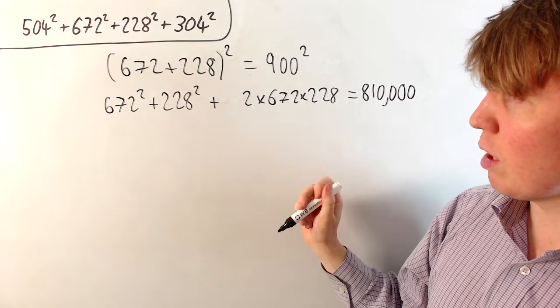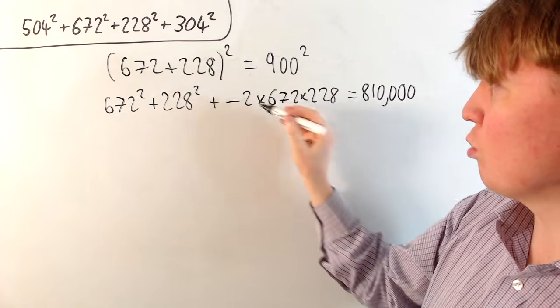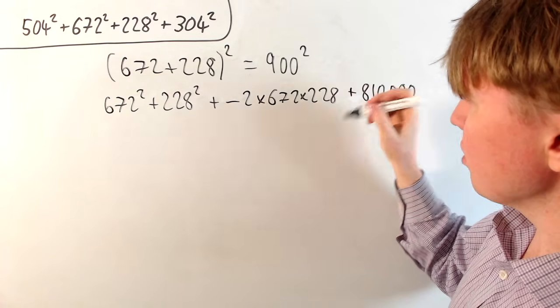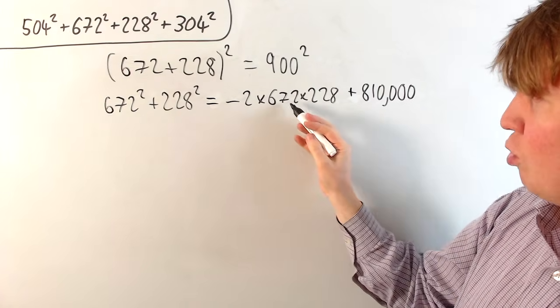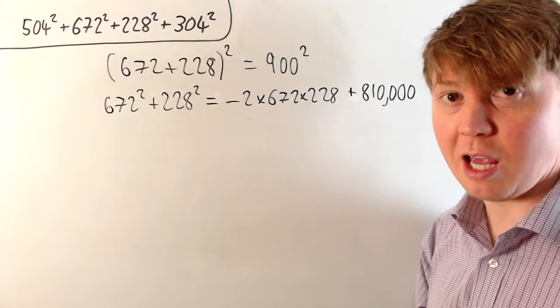To get the sum of these two squares expression on its own, we just need to subtract this term. And we take that onto the right-hand side. So we can write the sum of these two as minus 2 times this plus 810,000.